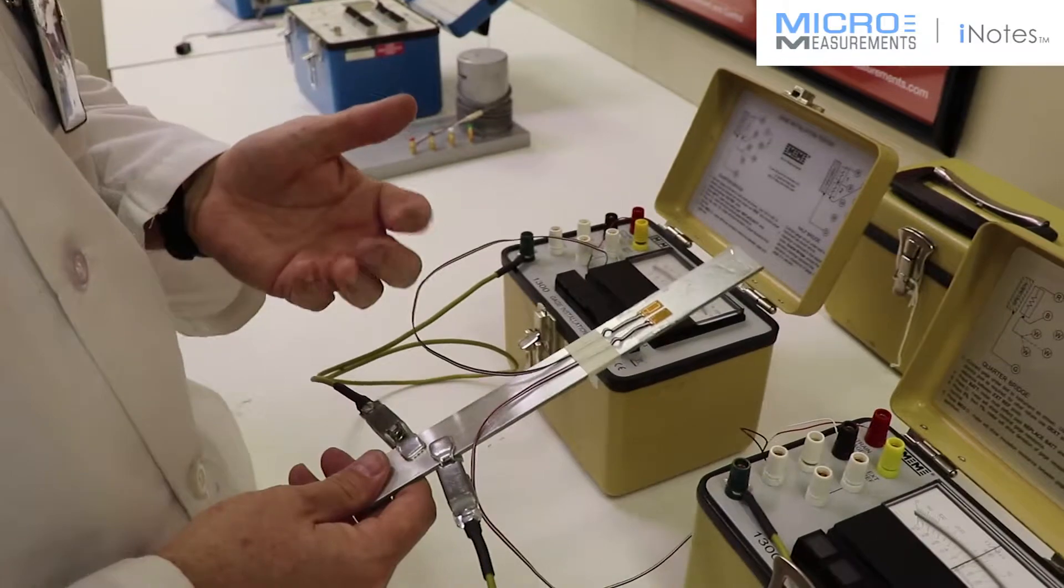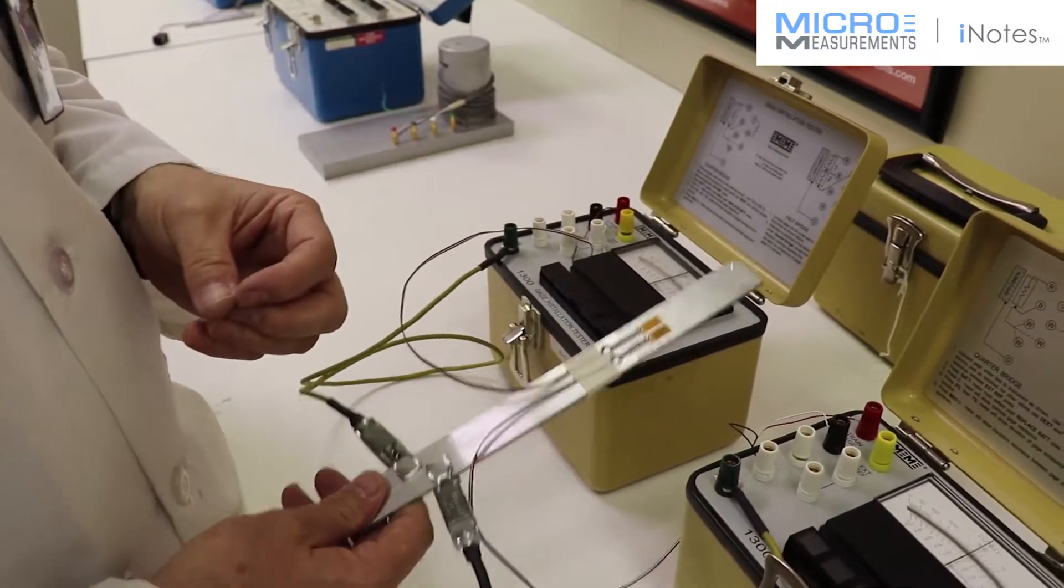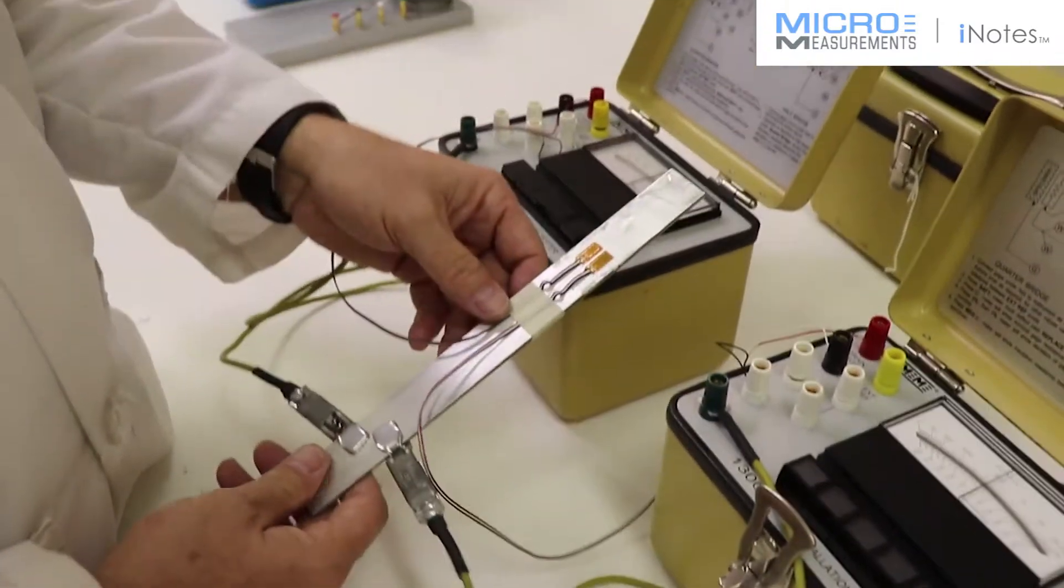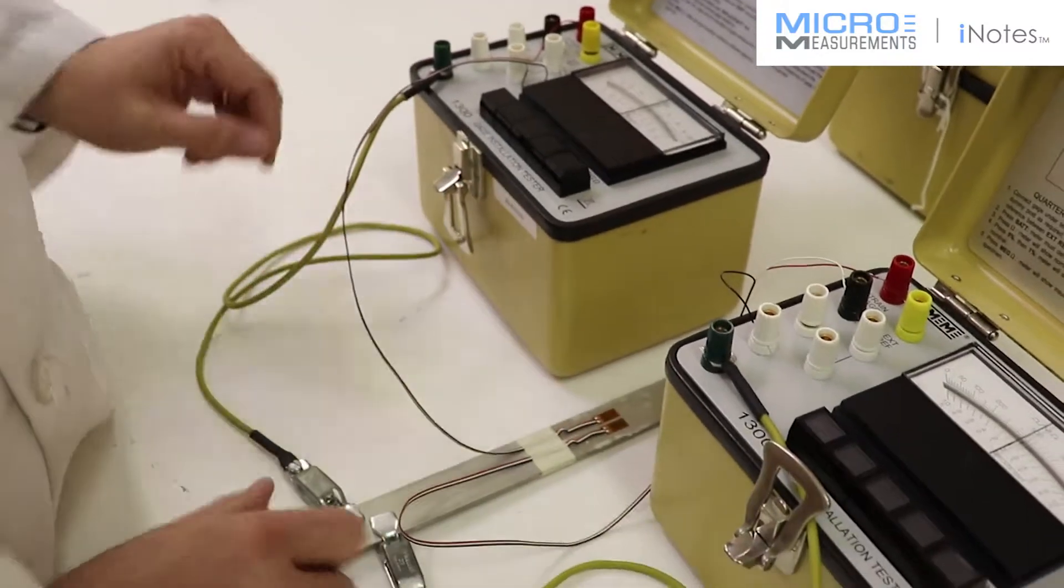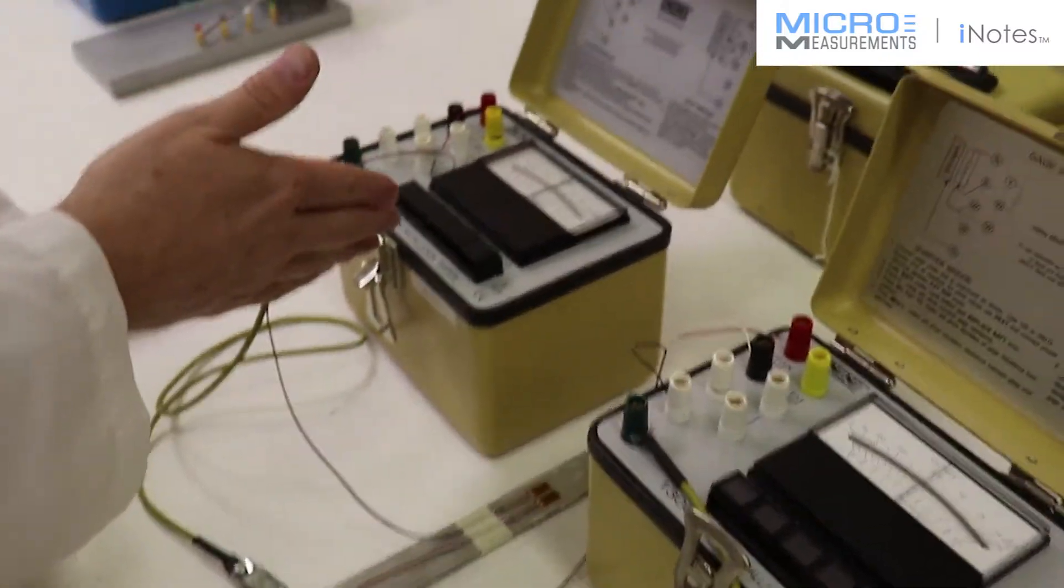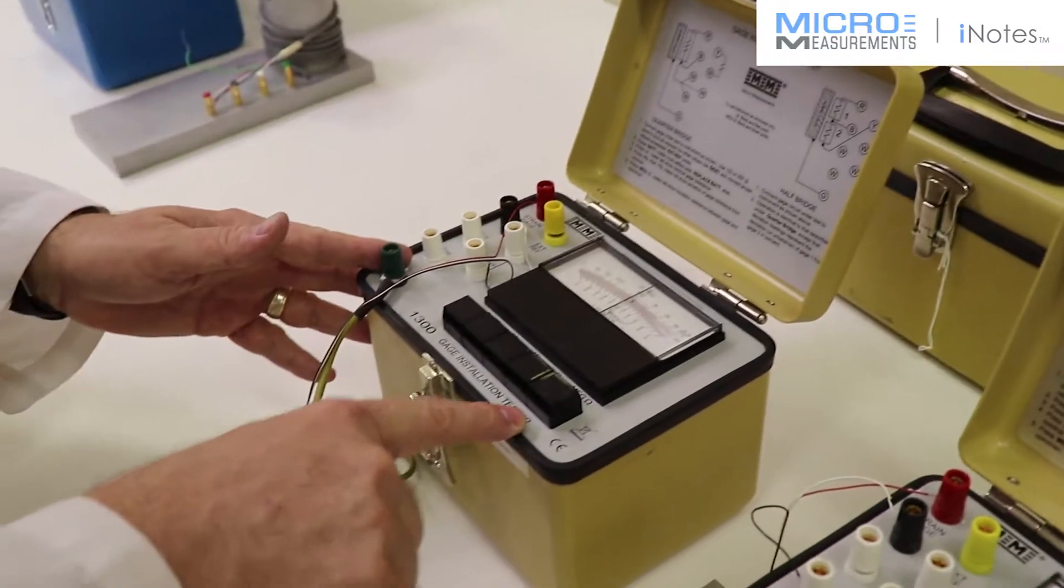We're basically going to look at the initial imbalance. We're also going to look at the resistance to ground. I'll take it and just lay it onto the table. We'll come over to this left gauge installation tester first.